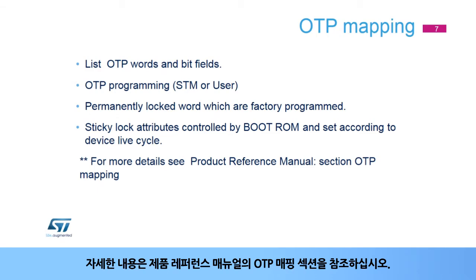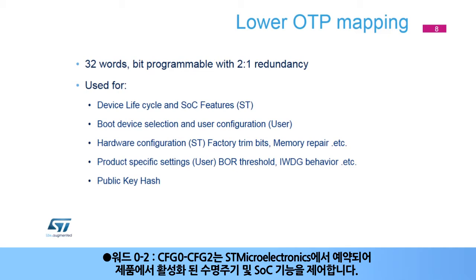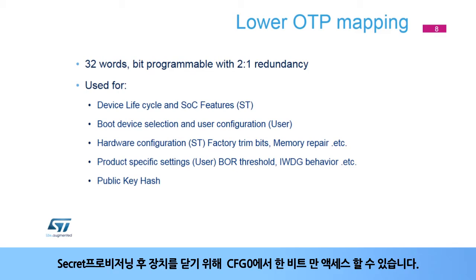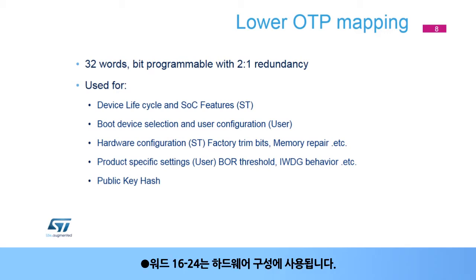For more details, see the Product Reference Manual, Section OTP Mapping. The lower OTP area is 32 words, which are bit-programmable only with 2-to-1 redundancy. Words 0 to 2 (CFG0 to CFG2) are reserved by STMicroelectronics to control the lifecycle and SOC features enabled in the product. Only one bit from CFG0 is accessible by the user to close the device after secret provisioning. Words 3 to 7 can be used to define boot device selection. Words 16 to 24 are used for hardware configuration, with word 16 including product-specific settings for the user.